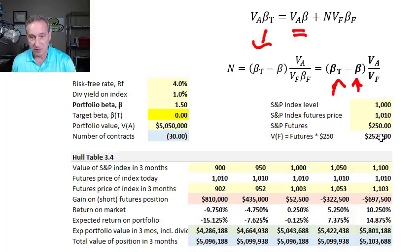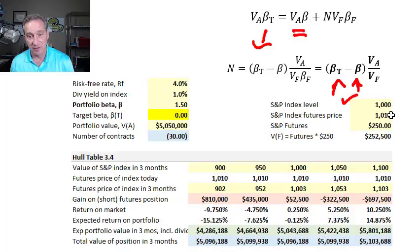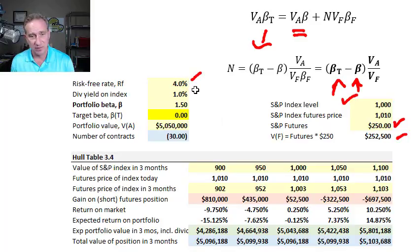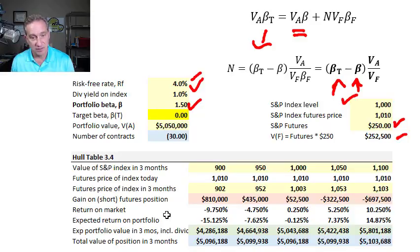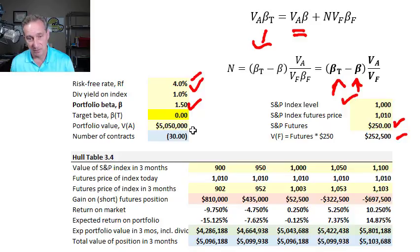In Hull's example, he has an S&P index level of 1000, a futures price a little higher at 1010, and the notional value of a single contract is $252,500. The assumptions include a risk-free rate, dividend on the index, and portfolio beta of 1.5. The target beta is zero — neutralizing the beta to get a net beta of zero in the portfolio. You could change this to any target beta on the spreadsheet. The portfolio value is a little over $5 million — $5,050,000.